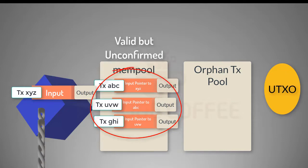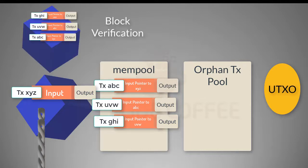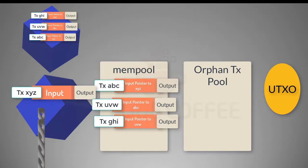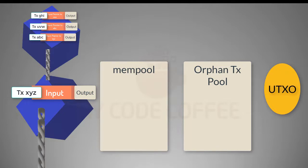These transactions are now valid but unconfirmed. They will be confirmed by miners. If this node is also a miner, it will collect transactions from the mempool and mine a block. When a miner mines a block and it reaches this node, the node performs block verification as well as transaction verification for all transactions in that block. If everything checks out, it attaches the block to its blockchain and removes those transactions from the mempool. The transactions are now both valid and confirmed.